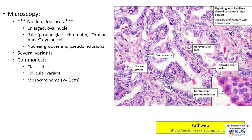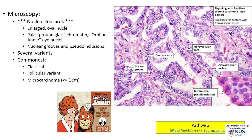Microscopically, the nuclear features are extremely characteristic, and this is what we base our diagnosis of PTC on. The nuclei are usually enlarged. Very often, they are oval rather than round. They have this very pale, almost empty-looking chromatin, sometimes called ground glass chromatin, and they are often called Orphan Annie eye nuclei because this cartoon character, Orphan Annie, has eyes that appear very empty. The other feature is the presence of nuclear grooves — we may see these folds or grooves longitudinally within the nuclei, and also pseudo-inclusions.